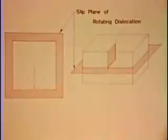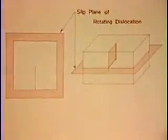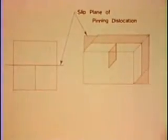One dislocation segment can rotate around another which has left the slip plane and is immobile. As long as the direction of the rotating dislocation is towards the pinning point, its Burgers vector does not change during rotation.